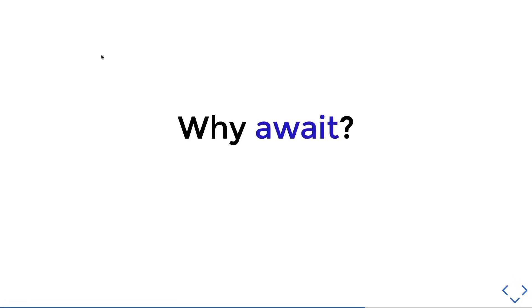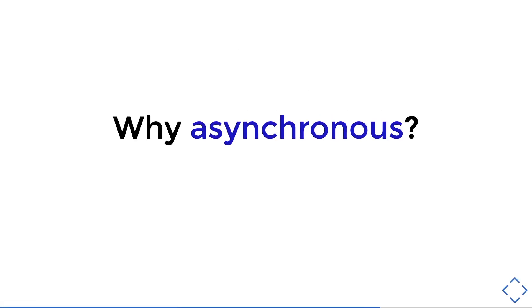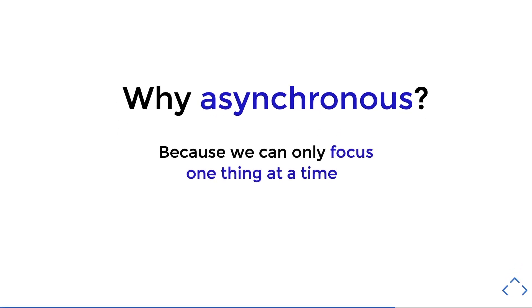So let's get back to the question at the start: why await? The better question is why asynchronous? This is because we can only focus on one thing at a time. In summary, we know how to create a Future function that is asynchronous using the await and async keywords, and we now know that the main method can also be an asynchronous function. If you liked this video, give it a thumbs up, subscribe for more, and comment any concept you want covered next. Stay safe and all the best — bye!